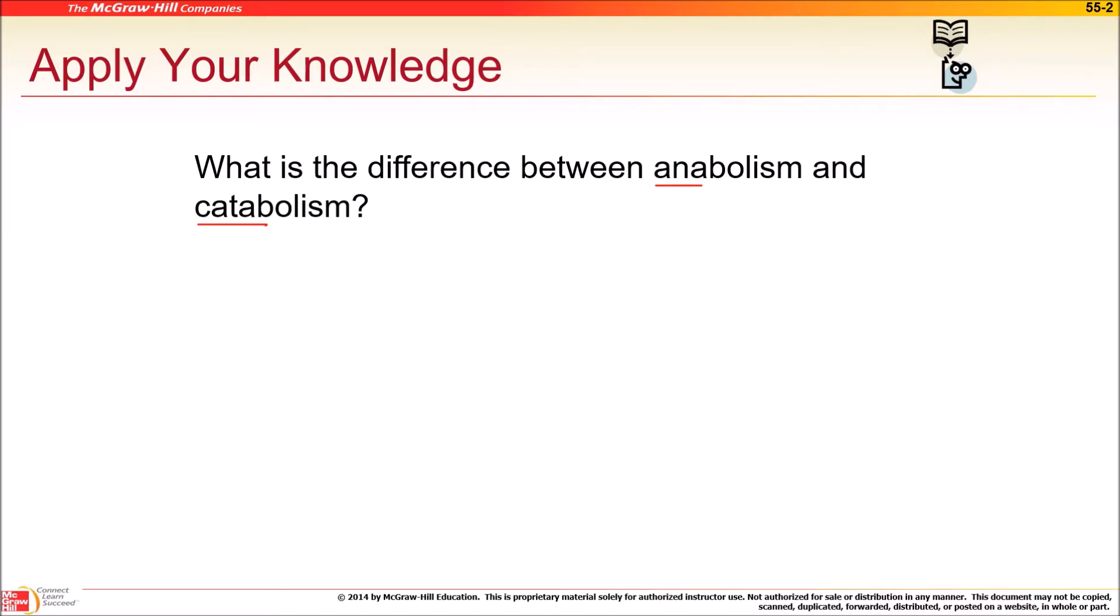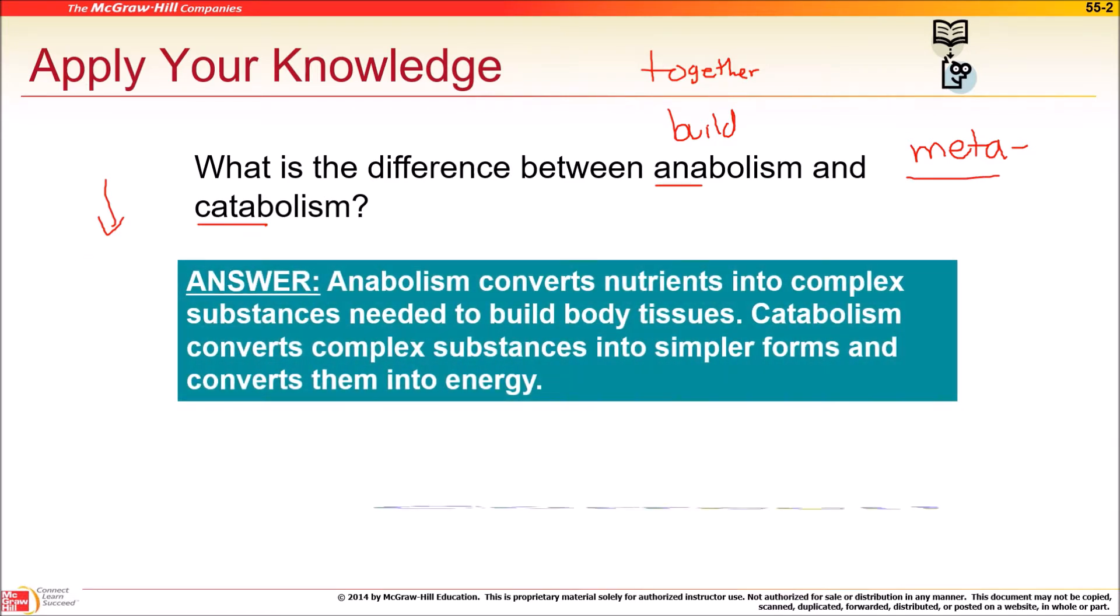Ana means to bring together, so building up things is anabolism. Think of anabolic steroids, right? You want to build. Kata means down, to break down. We release energy in catabolism. The combined process, both together, is metabolism.